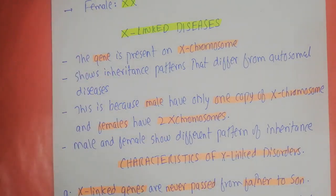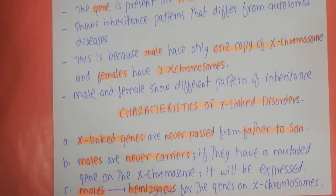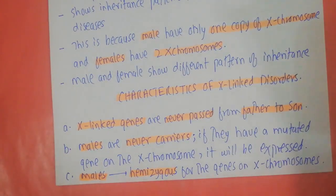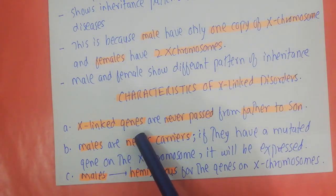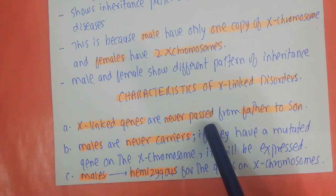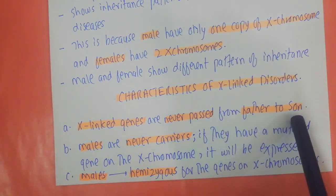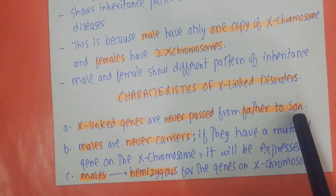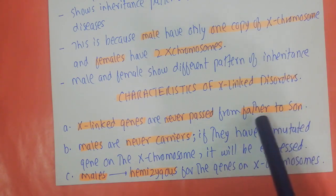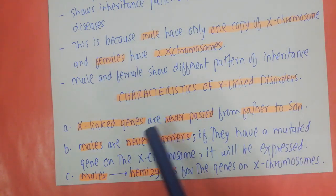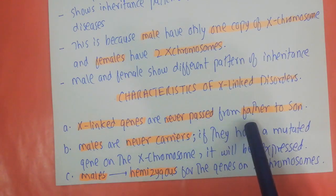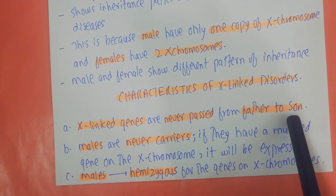There are some distinguishing characteristics of X-linked disorders. One is that X-linked genes are never passed from father to son, because the son receives the Y chromosome from the father, not the X chromosome. The son receives his X chromosome from his mother. Therefore, X-linked genes will never be passed from father to son.